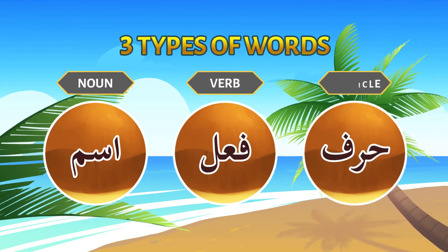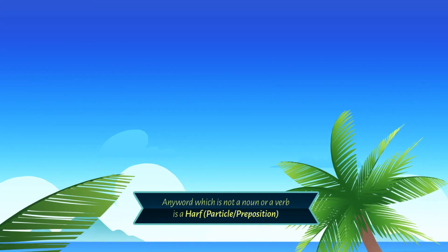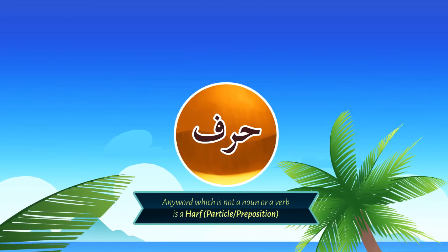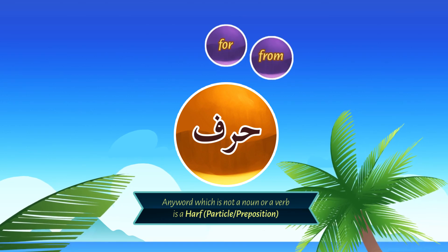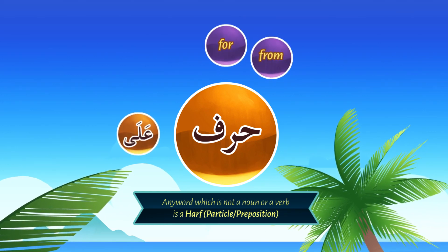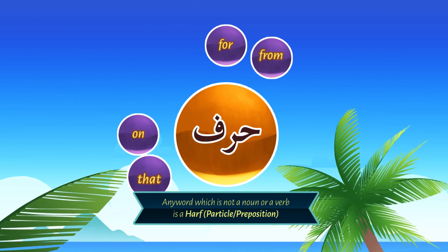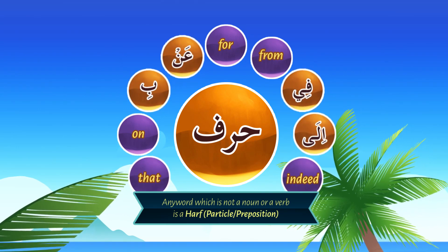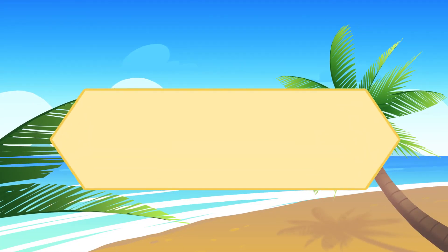Any word which is not a noun or a verb is a harf, or particle. For example: لِ or لَ. Particles include: لِ meaning 'for', مِن meaning 'from', عَلَى meaning 'on', أَن meaning 'that', إِنَّ meaning 'indeed', and so on.